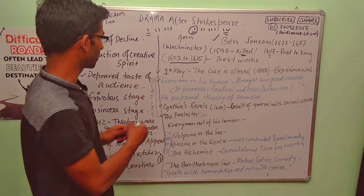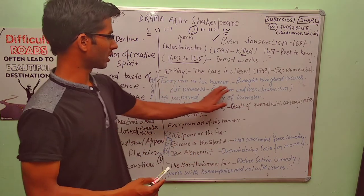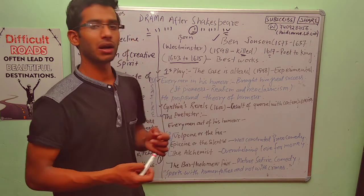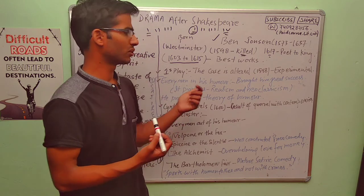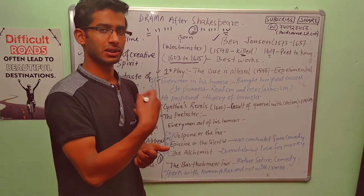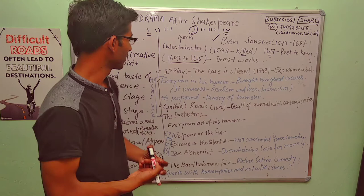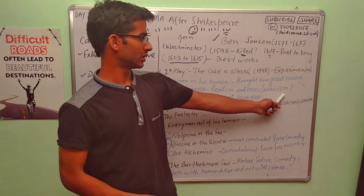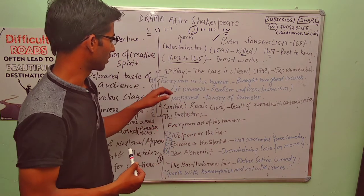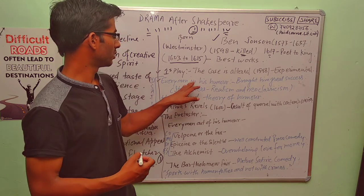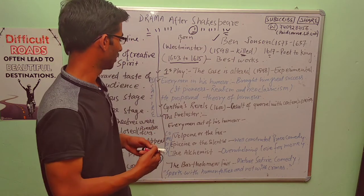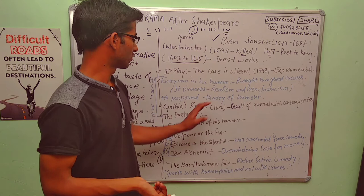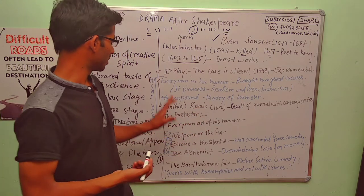His satires are Everyman in His Humour, and this was his first work which brought him great success. And second thing is that in this work, he introduced his theory of humor. It pioneers realism and neoclassicism. He propounds theory of humor. Cynthia's Revels which got published in 1600, result of quarrel with his contemporaries. So there was a quarrel. And this work was the result. The Poetaster was the next satire.